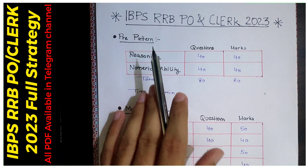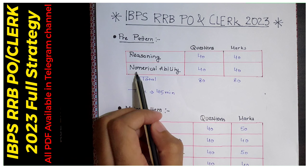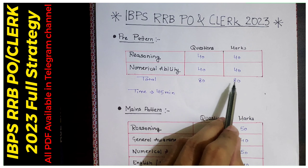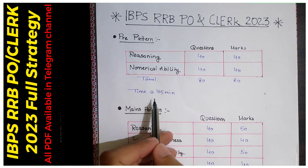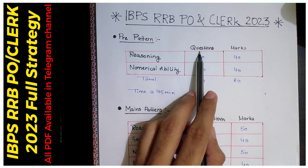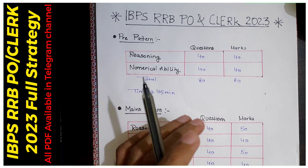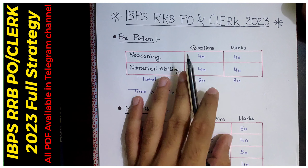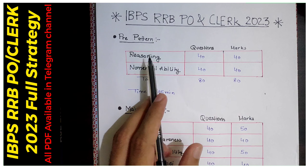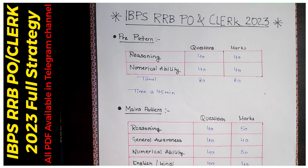We have mains and prelims. In prelims, first of all we have two subjects — reasoning and quant. Both will be 40-40 questions and 40-40 marks, so total 80 questions and 80 marks. The composite time will be 45 minutes. You can distribute it: like 20 minutes for reasoning and 25 minutes for quant, depending on your strength. Manage your time accordingly.